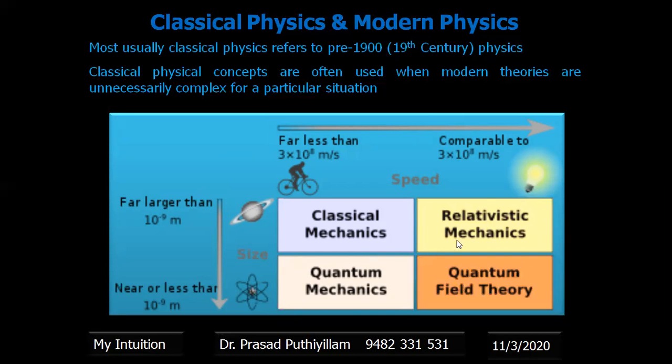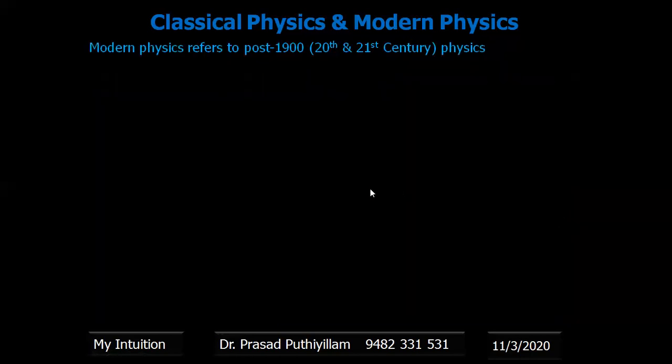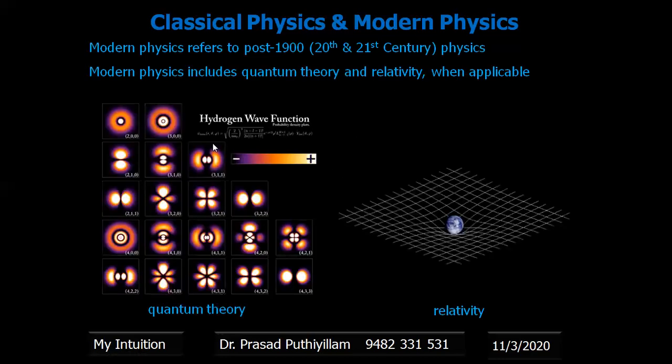Both are followed by quantum field theory. Modern physics usually refers to 20th century or 21st century physics. Modern physics includes quantum theory and relativity mainly, whenever it is applicable.